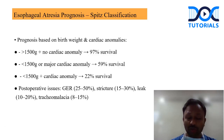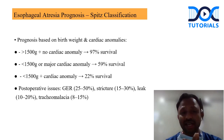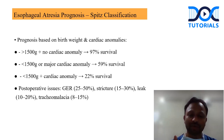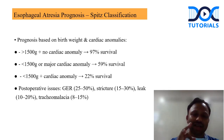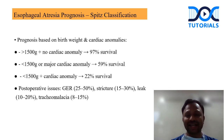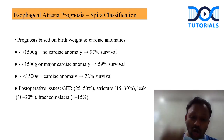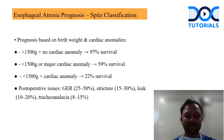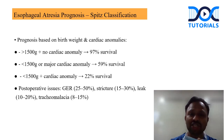Next, there are points regarding esophageal atresia. The prognostic factor is the Spitz classification, based on two components: birth weight and presence or absence of cardiac anomalies. A child weighing more than 1.5 kg with no cardiac anomaly has around 97% survival. Less than or equal to 1.5 kg or major cardiac anomaly gives around 15% survival. Less than 1.5 kg with a cardiac anomaly results in only about 22% survival. Post-operative issues include GER, stricture, leak, and tracheomalacia.